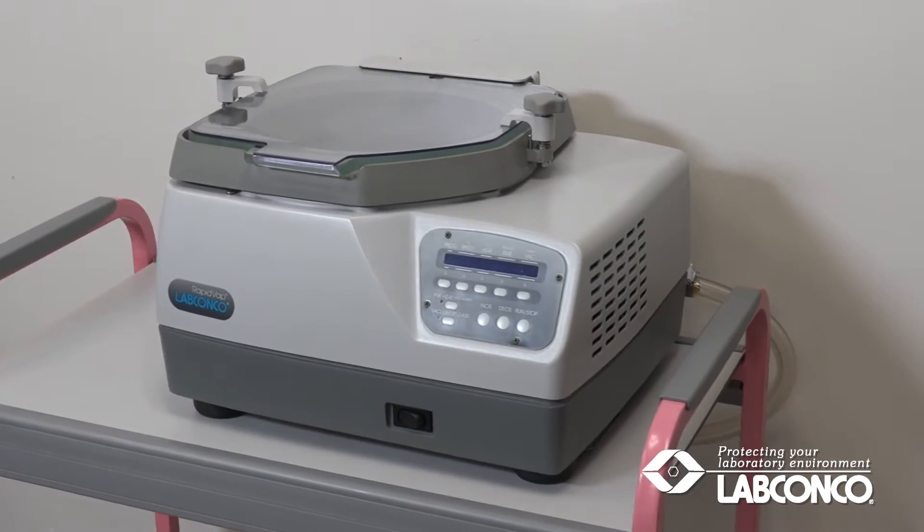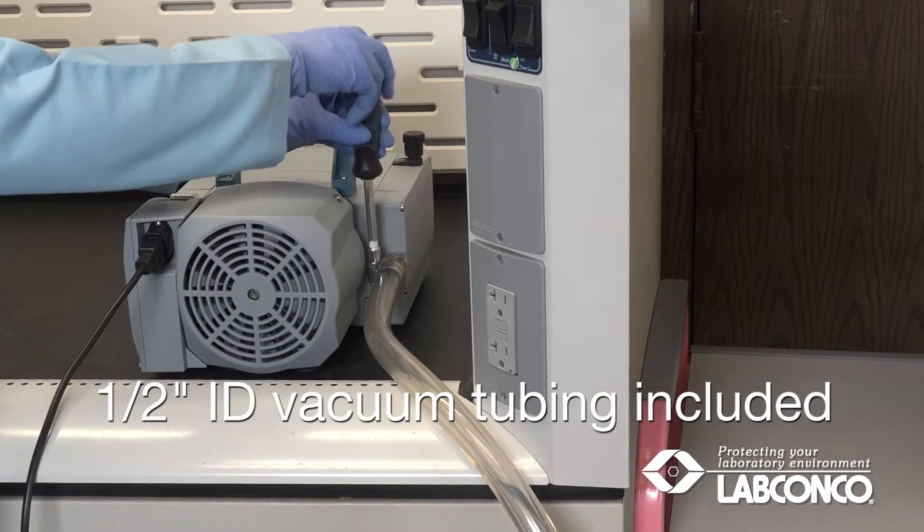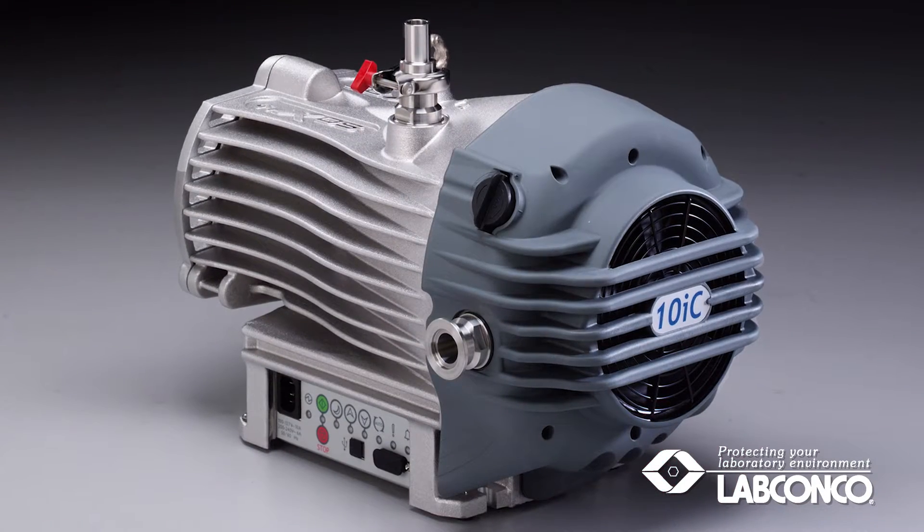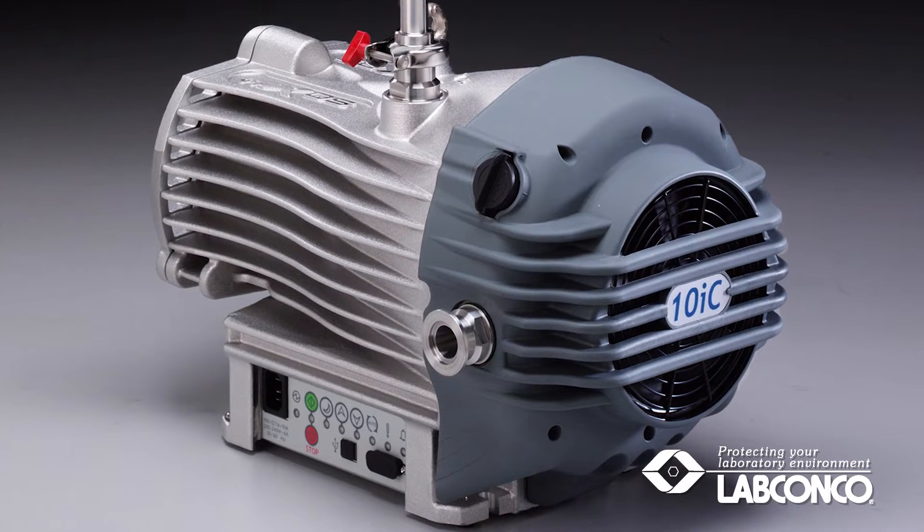Once the RapidVap is in place, connect the vacuum pump. A diaphragm or scroll pump is recommended capable of free airflow of 88 liters per minute at 31 millibars.